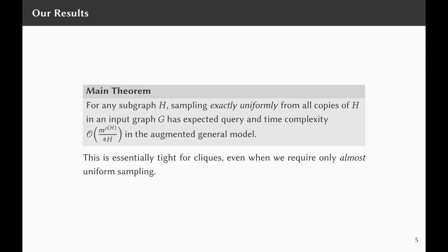Our main result is the following: for any subgraph H, sampling exactly uniformly from all copies of H in a given input graph G has expected query and time complexity O(M^(ρ(H)) / copies of H) in the augmented general model. We also show this is essentially tight for cliques, even when we require only almost uniform sampling — that is, sampling that is close in L1 distance to uniform sampling.